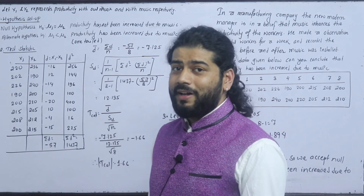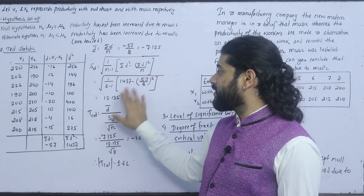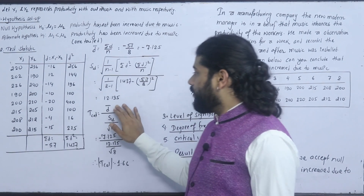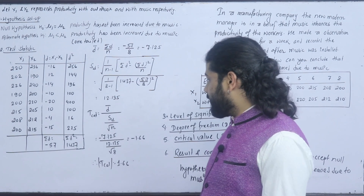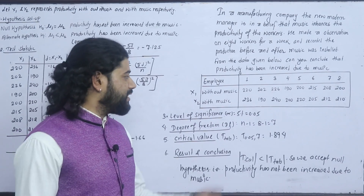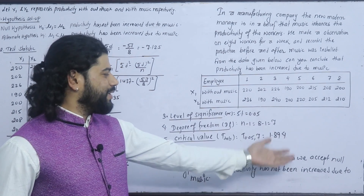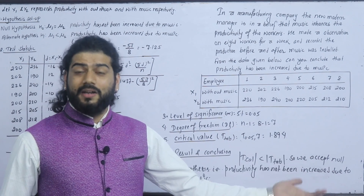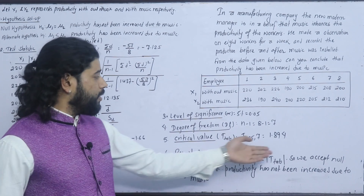The sum d gives d-bar = -7.125. Standard deviation = 2.135. T calculated = difference mean divided by standard deviation, result is 1.66. Level of significance: 5%, degree of freedom = n - 1 = 8 - 1 = 7. Tabulated value at 0.05, 7 df = 1.89. Result: T calculated = 1.66, tabulated = 1.89.